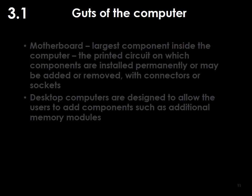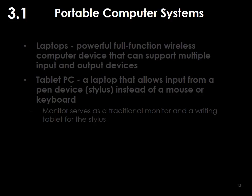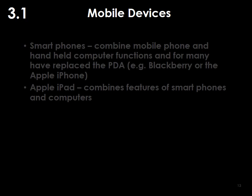Desktop computers are designed to allow users to add components such as additional memory modules — the more RAM you have, generally the faster the computer will be. Portable computer systems include laptops, tablets, and increasingly smartphones being used in law firms. Mobile devices like smartphones are really computers in a tiny package, allowing you to run word processing, spreadsheets, and more. Attorneys often want to plug their smartphones or iPads into a projector to show presentations on a screen, and there are adapters that allow this.